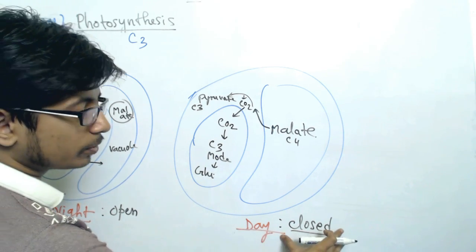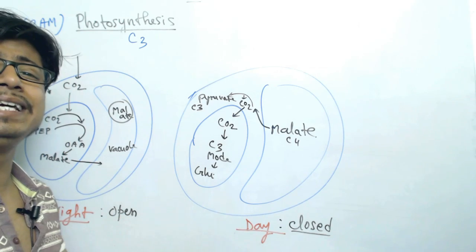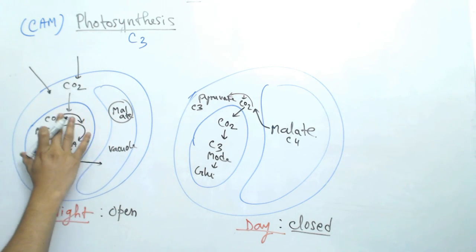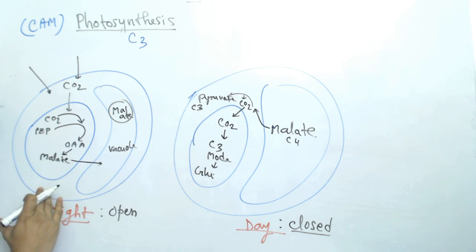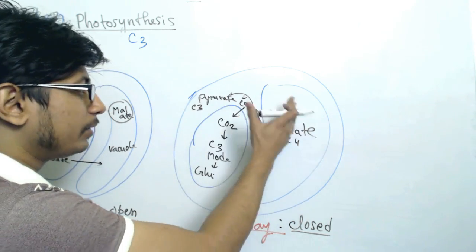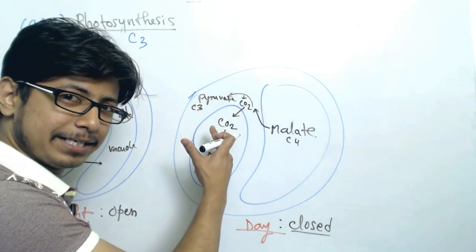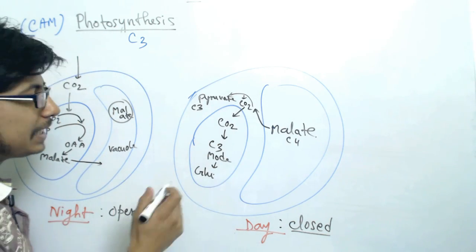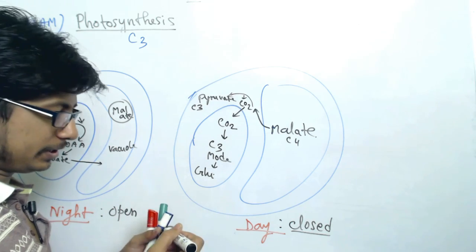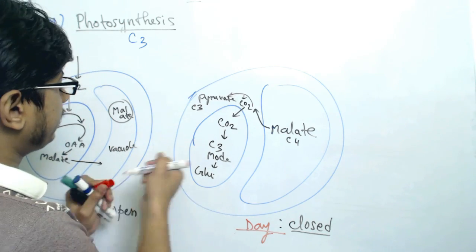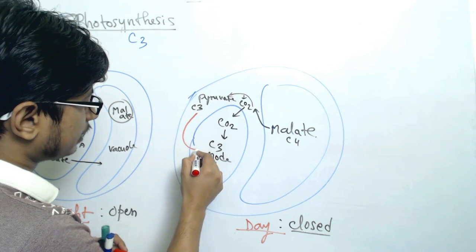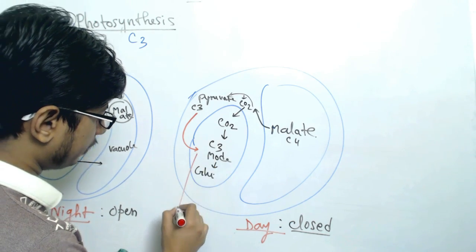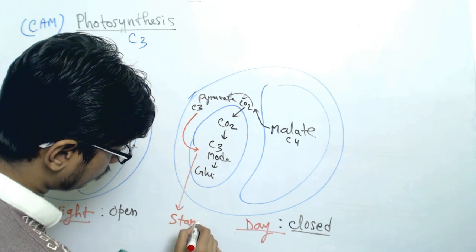At this point the stomata is closed, so they don't need any carbon dioxide from the atmosphere because the carbon dioxide they took in the previous night was stored as malate. In the daytime they use that malate-to-pyruvate conversion to produce sugar. The pyruvate that is released in the cytosol is transported into the chloroplast and converted into starch, where it is stored.